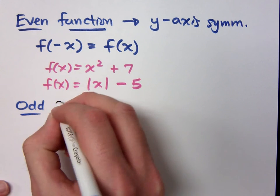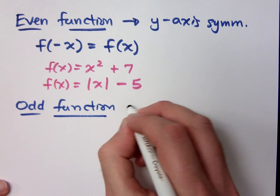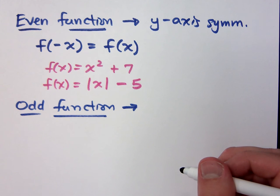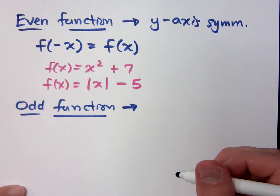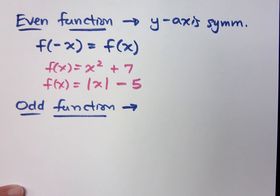Now let me tell you about an odd function. A lot of students think that an odd function means you have x-axis symmetry. But think about that — if you are symmetric about the x-axis, flipped over the x-axis with your mirror image down there as well, that means you wouldn't be a function. Can you think of a function that's above and below at the same time? It's got to pass the vertical line test.